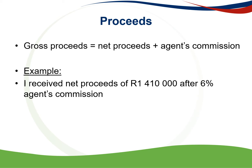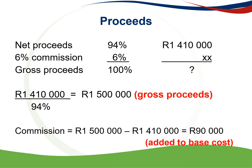I receive net proceeds of 1,410,000 rand after 6% agent's commission has been deducted. The net proceeds represent 94% of the gross proceeds, and the 94% is 1,410,000 rand. The 6% agent's commission is the remaining 6%, which added together gives you the gross proceeds of 100%. So we calculate: 1,410,000 rand divided by 94% gives you 1,500,000 rand, which is the gross proceeds. The commission is the difference, 1,500,000 minus 1,410,000 rand, which gives you 90,000 rand. The agent's commission will always be added to the base cost.